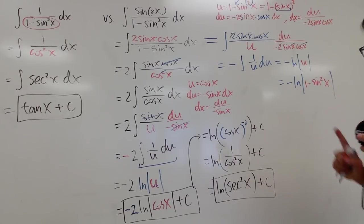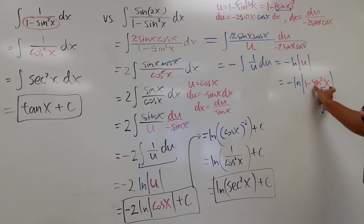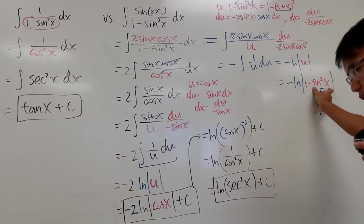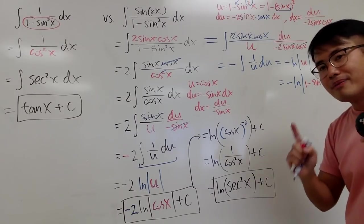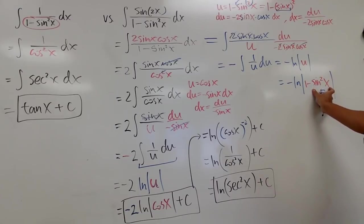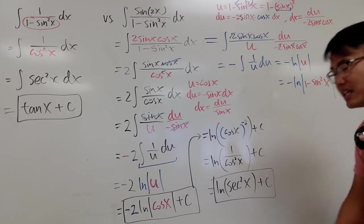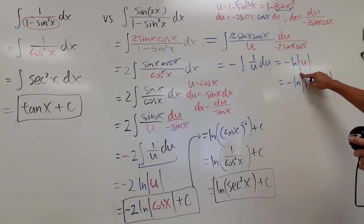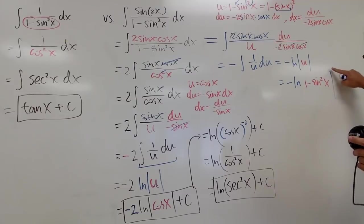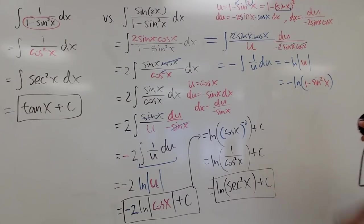In fact, the maximum of sine squared x is 1. So we have 1 minus, at most, 1 — this right here can never be negative. So I can actually change that to a parenthesis.